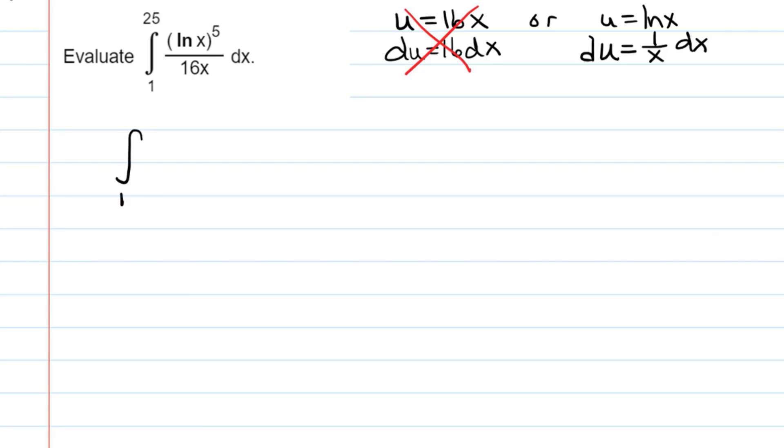So I have the integral from 1 to 25. And I'm going to separate out the integrand into a product of natural log of x to the fifth times 1 over 16 times 1 over x. And the reason I'm doing that is because I want to be able to see that 1 over x and the dx, which I see right here, that's going to be my du.